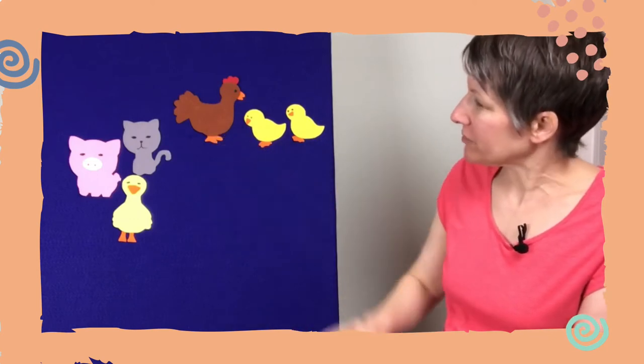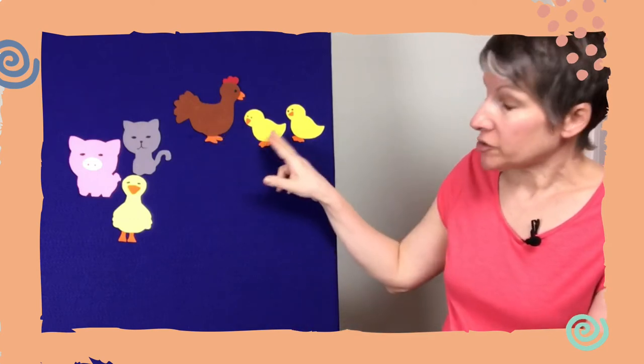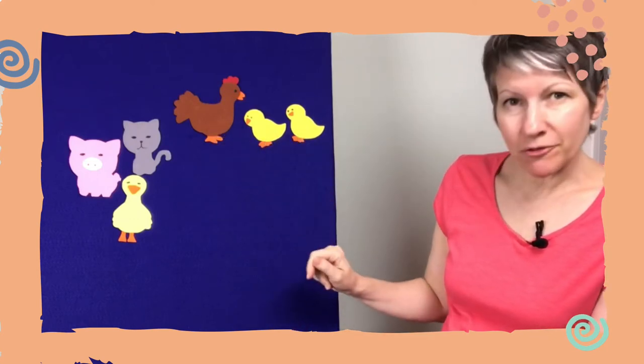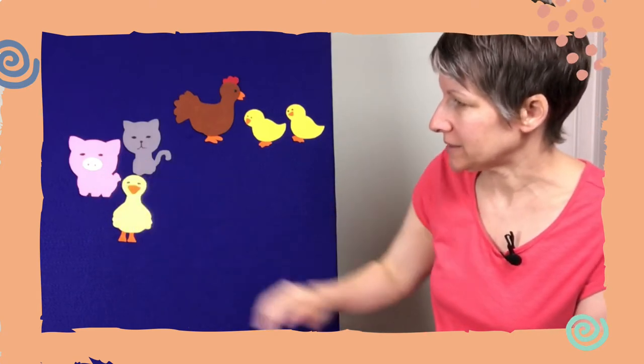Once upon a time there was a little red hen and she had two chicks and she lived on the farm with a pig and a cat and a duck.